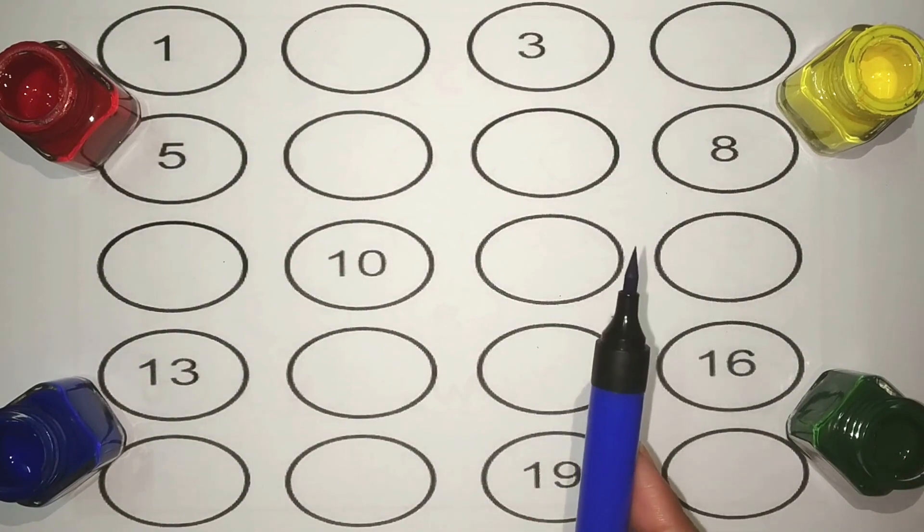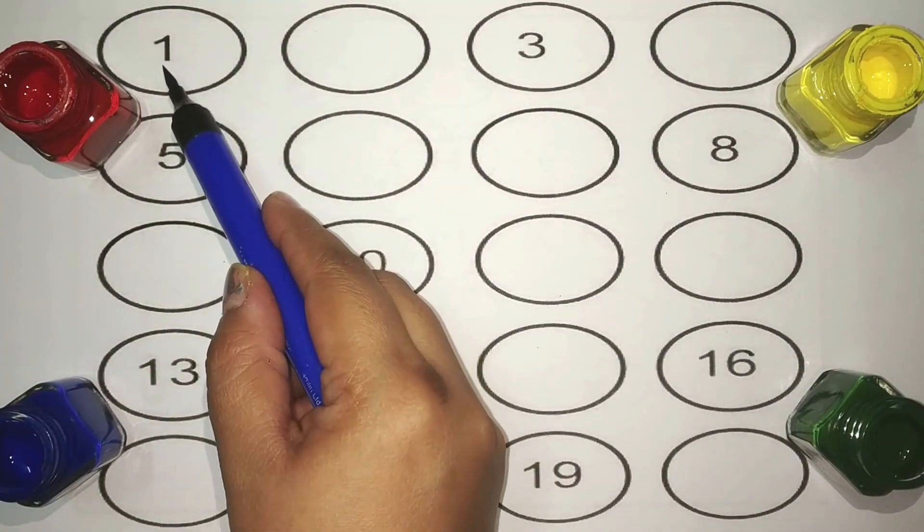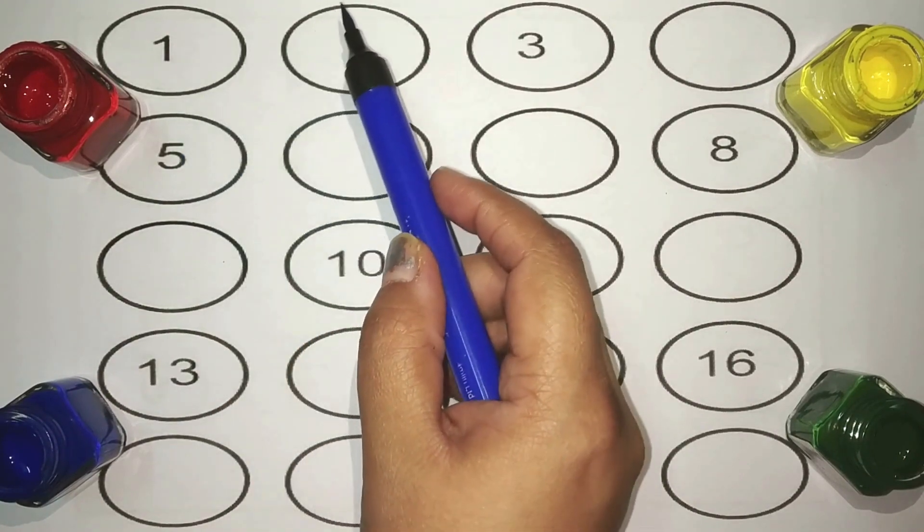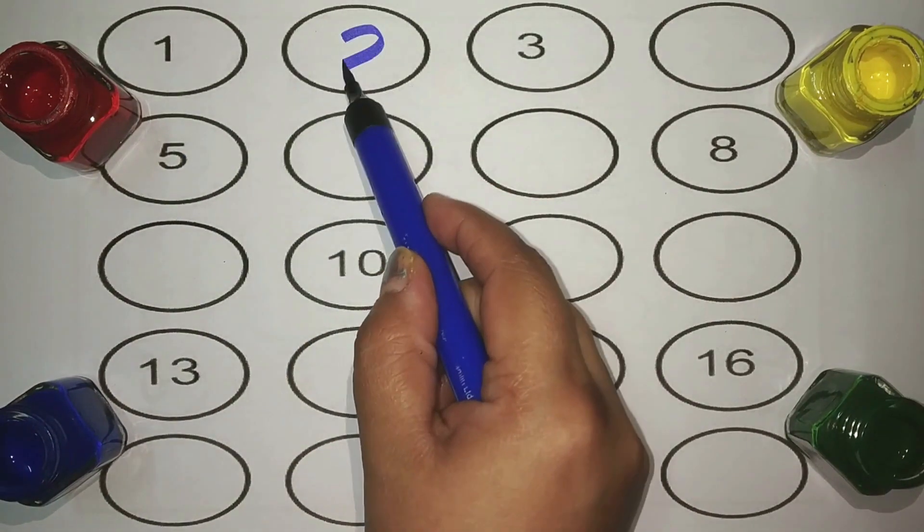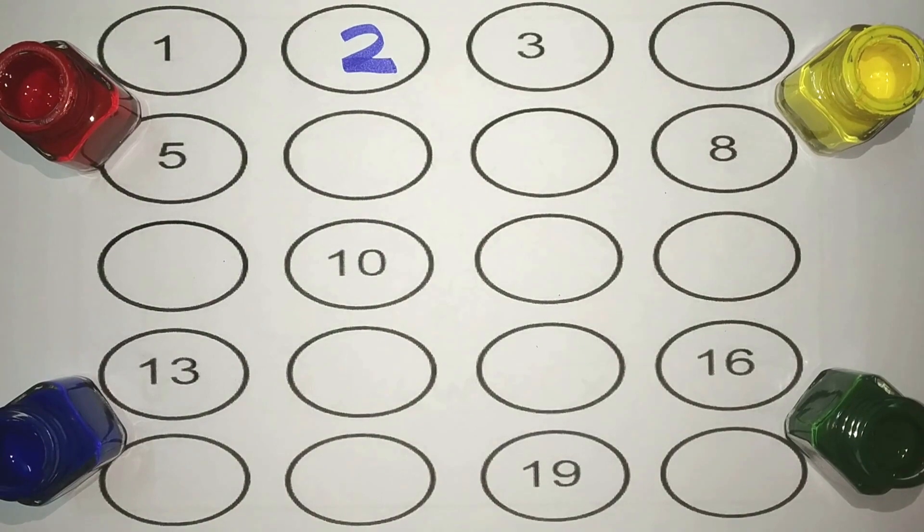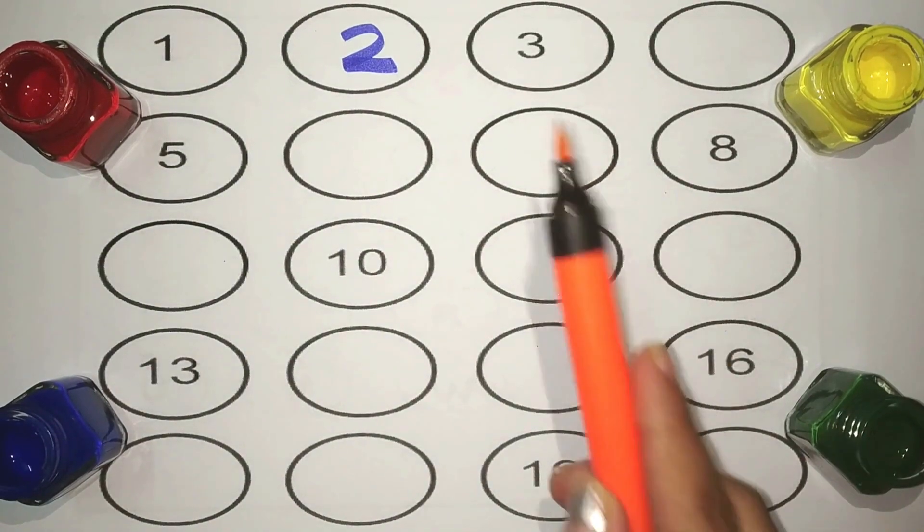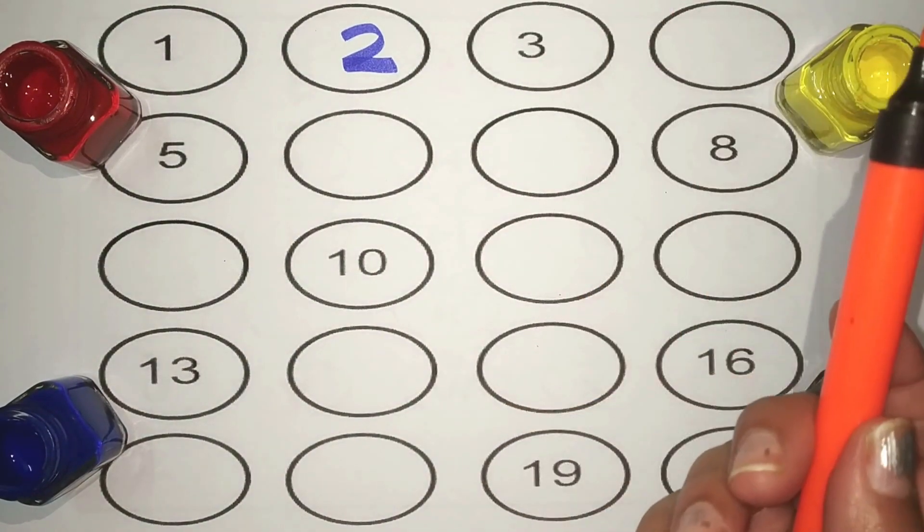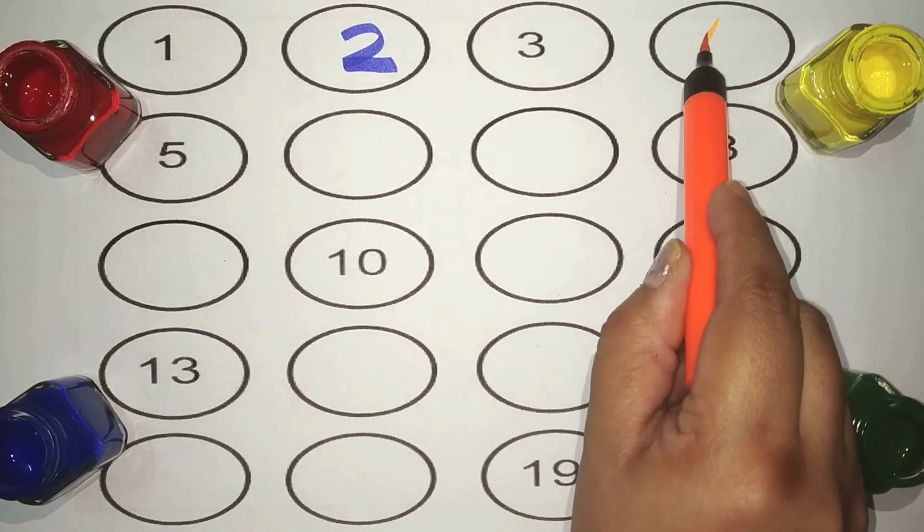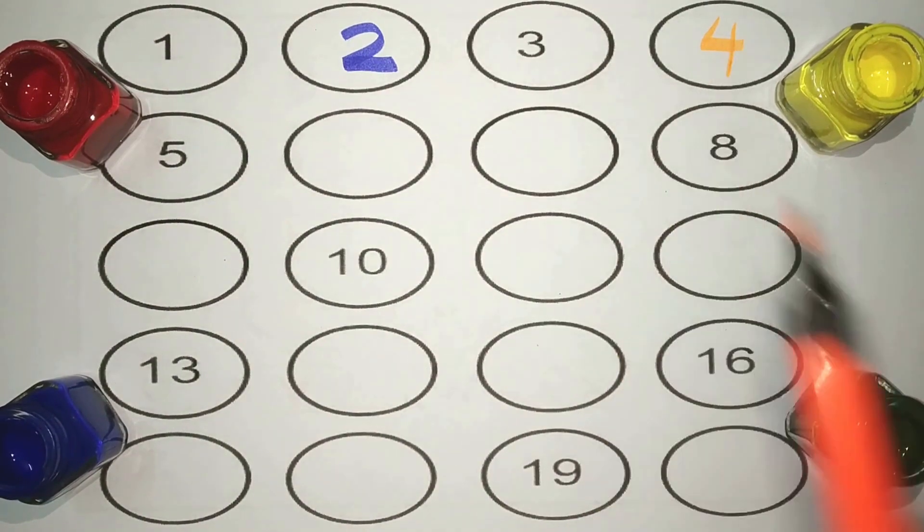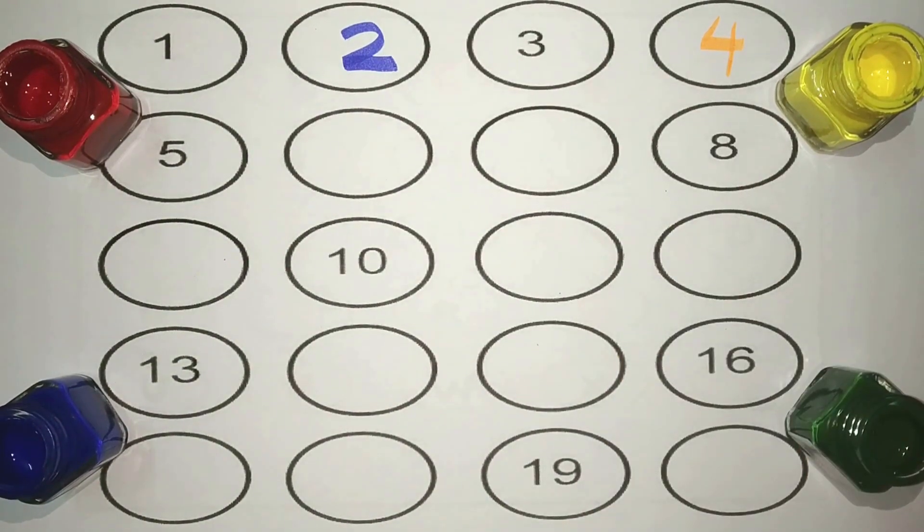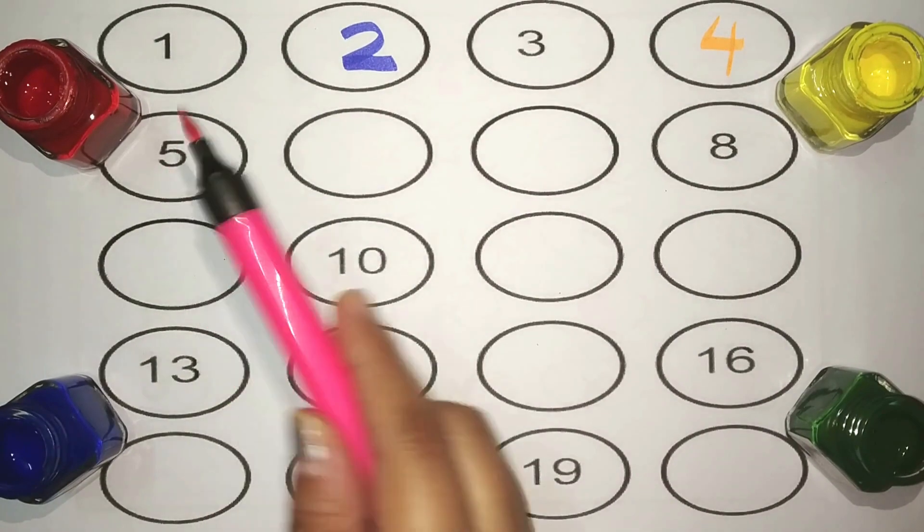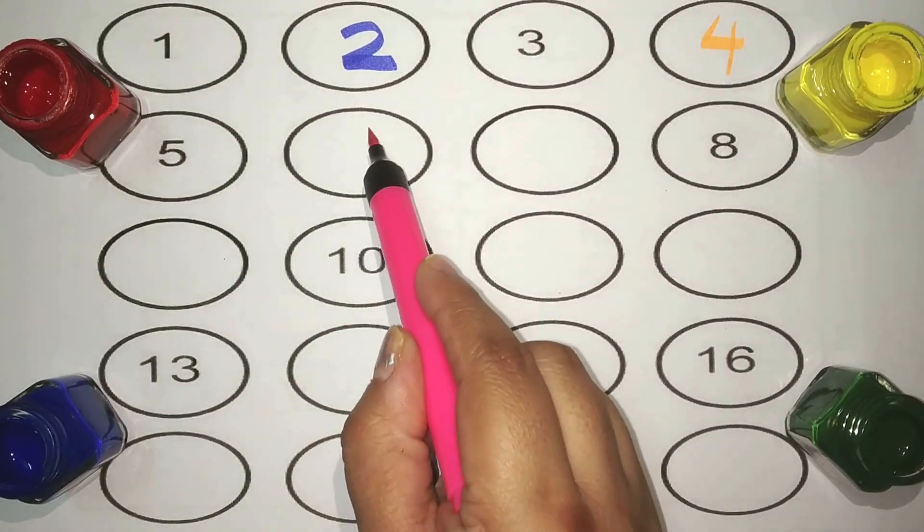Blue: one, two, three. Orange: four, five. Pink: six.